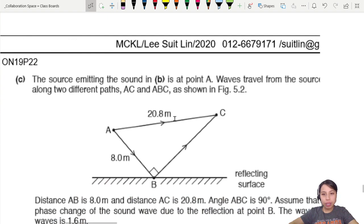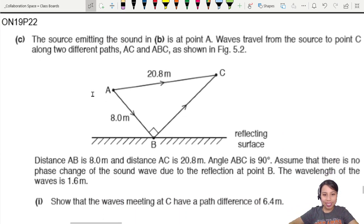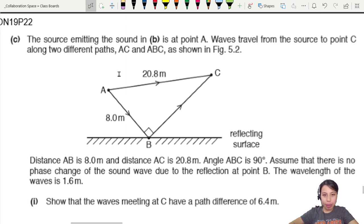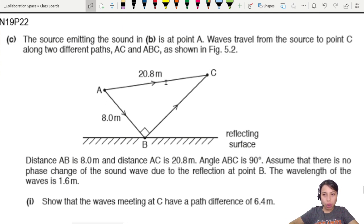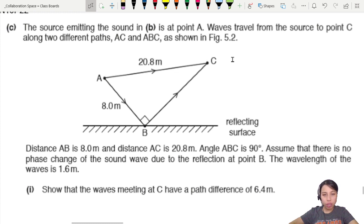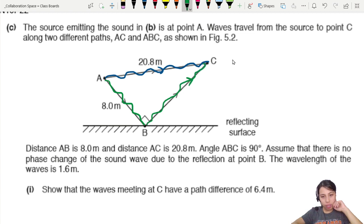Now we go to the interference part of the question. The source emitting sound is at A. So A is where the waves come out. Waves travel from the source to C, two different paths. So you can see that the first path travels this distance. Very quickly, you reach the end. The other path is going down here actually, hit against the reflecting surface, and then only reach C. So one is definitely much longer.